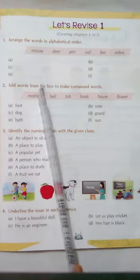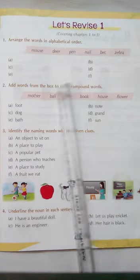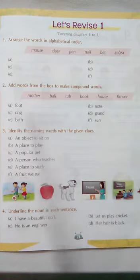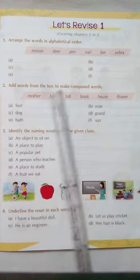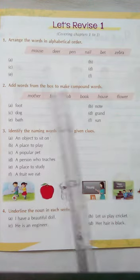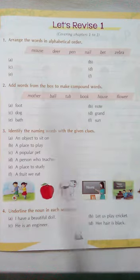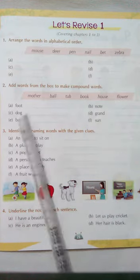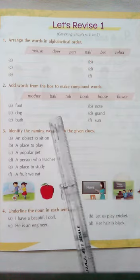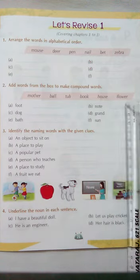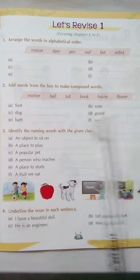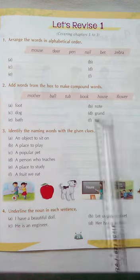Add words from the box to make compound words. We have to make these compound words. Like football, dog house, bathtub, notebook, grandmother, sunflower.